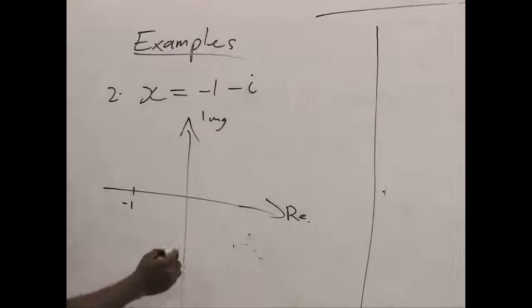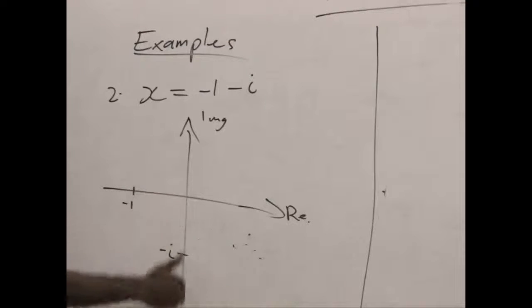We also have minus i which is eventually negative 1 so we have minus i also below the imaginary axis. The negative numbers for the imaginary axis also fall below.